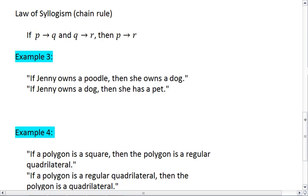The second law of logic we want to talk about is the law of syllogism, which is also called the chain rule. This tells us that if P implies Q, and Q implies R, then P implies R. This is easiest to look at with an example, so take a look at example three.